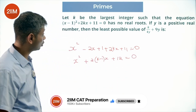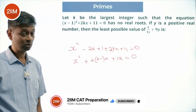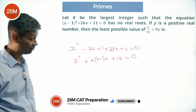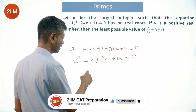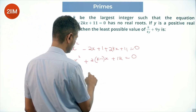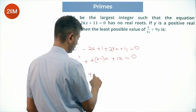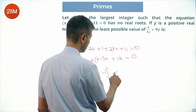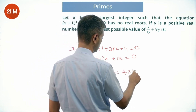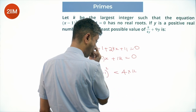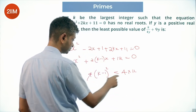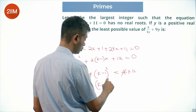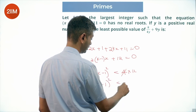This has no real roots, so the discriminant is less than 0. B squared minus 4ac is negative, meaning B squared is less than 4ac. So 4 times (k minus 1) squared is less than 4 times 12, giving (k minus 1) squared less than 12.